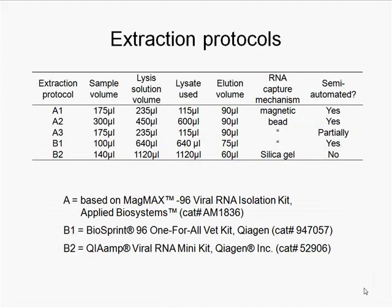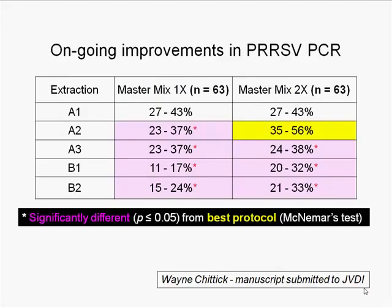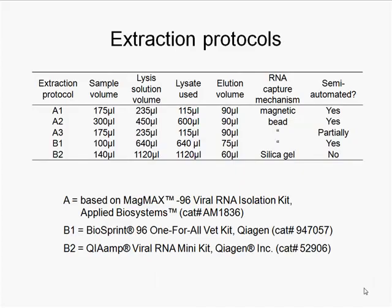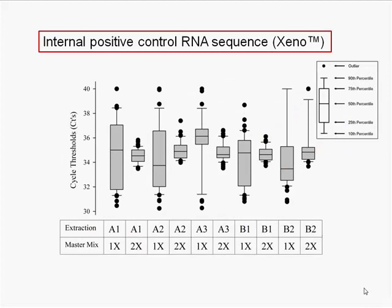The experiment wasn't perfect because we started with different sample volumes across extraction procedures, which likely impacted results. The best method had a much higher starting sample volume, meaning more RNA but also more inhibitors. The key lesson is that there are PCR inhibitors in oral fluids that must be dealt with. Wayne was able to overcome inhibition by doubling the level of enzymes — the larger sample volume brought down more RNA but also more inhibitors, and doubling enzymes allowed detection of the remaining RNA.